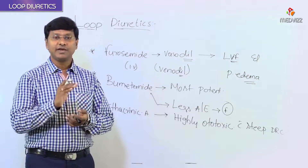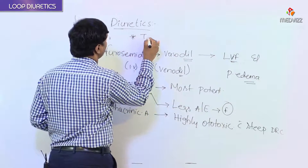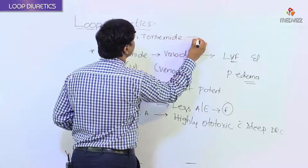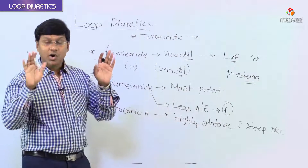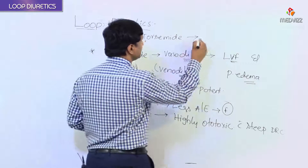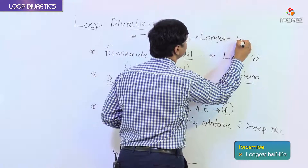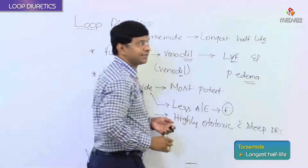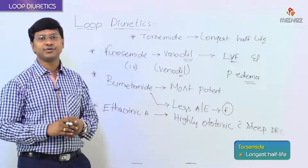Torsemide is another important loop diuretic. Among all the loop diuretics, torsemide has the longest half-life. This is an important point about torsemide.